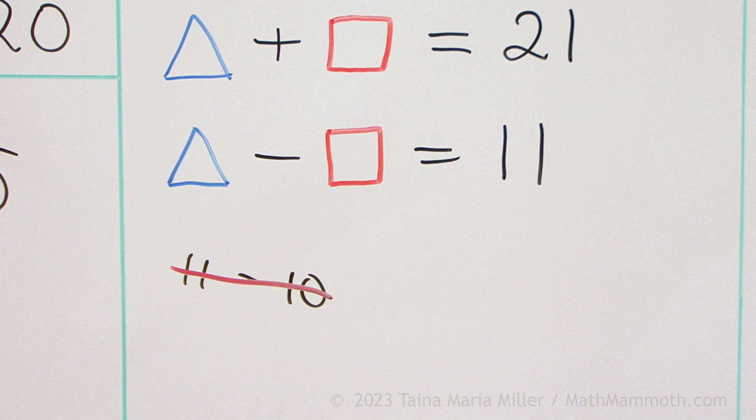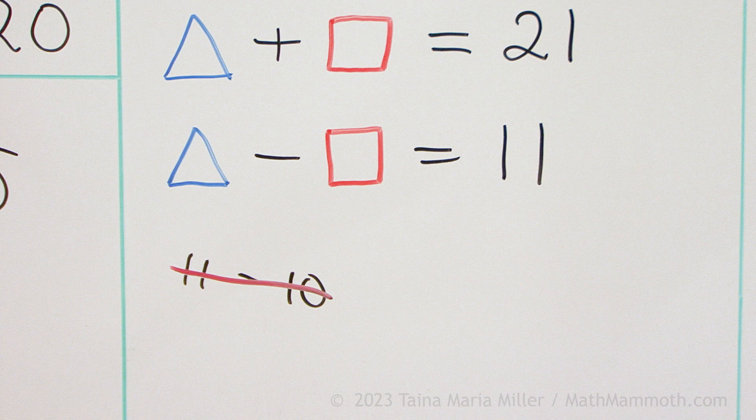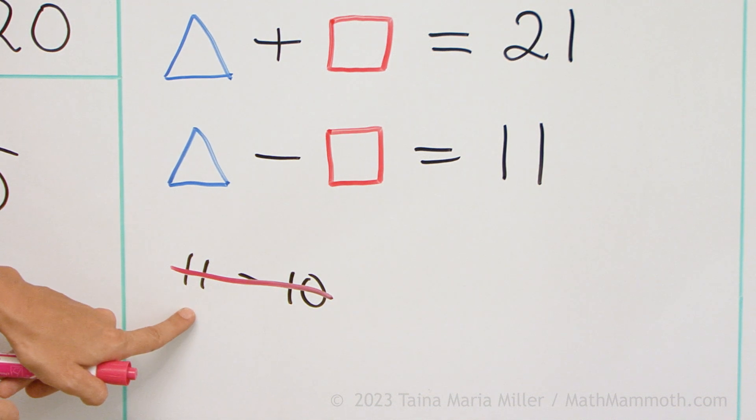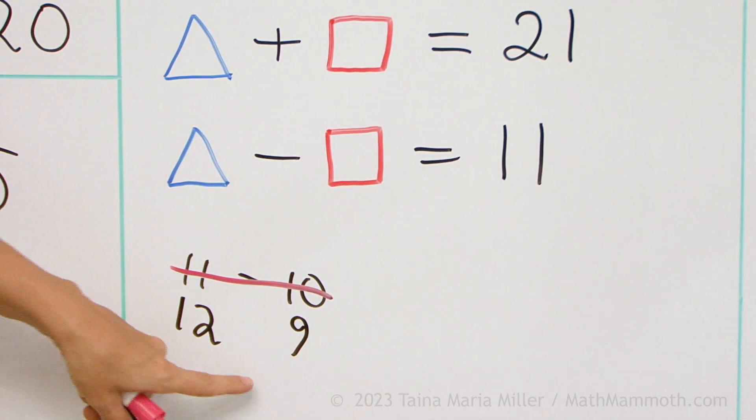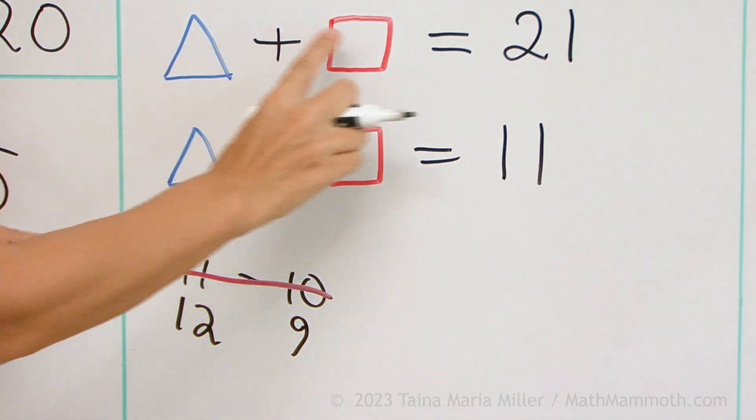And maybe you want to go in order so that you will write down each guess. So maybe I'll go with, let's make this more, like 12 and 9. They add up to 21. 12 plus 9 is 21.